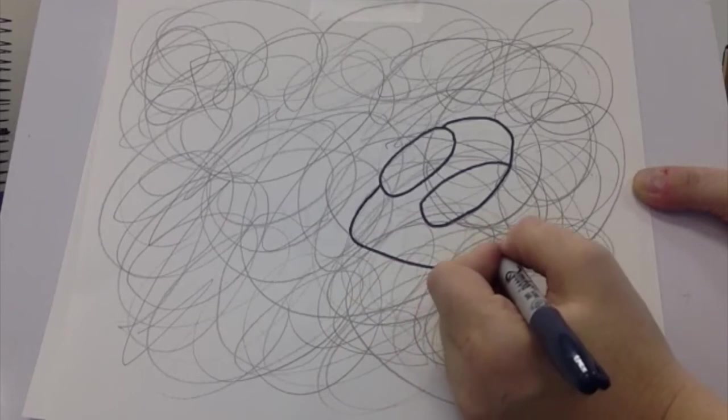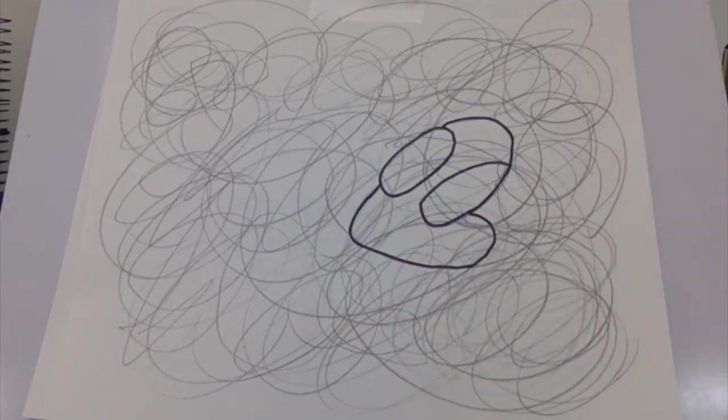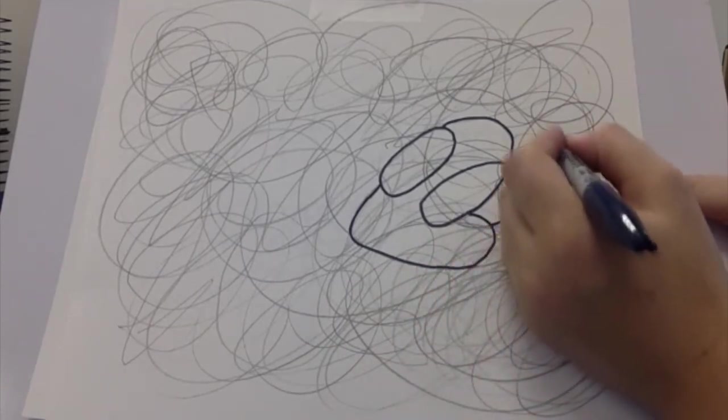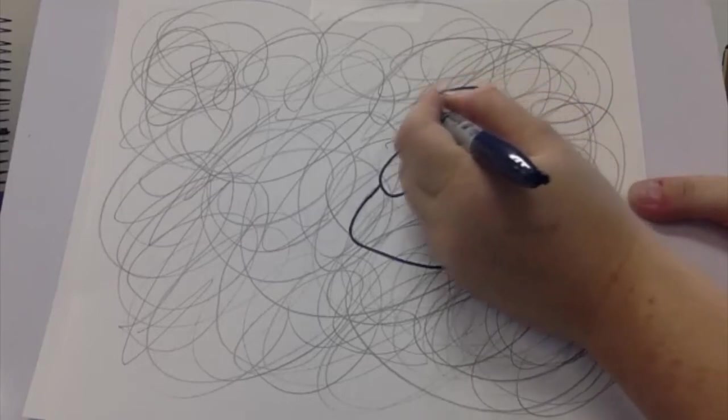And all I'm doing again is tracing on top. So here I have the basic structure of a head and then I'm going to add a little bit more. I'm just using the scribble lines that are there.